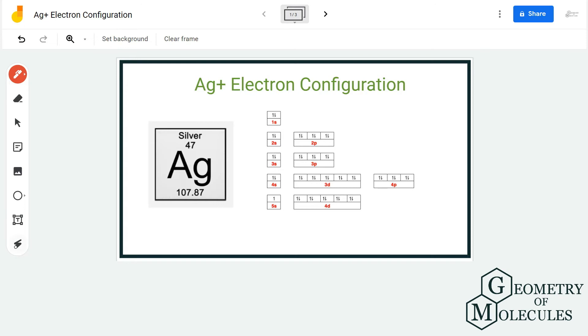Hi guys, today in this video we are going to look at the electron configuration for Ag+. Ag is the chemical formula for silver, and to understand its electron configuration we have to first look at the electron configuration of silver in its ground state.